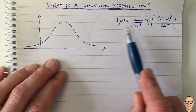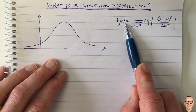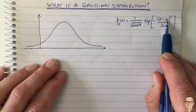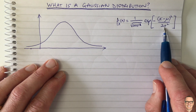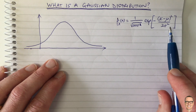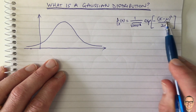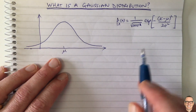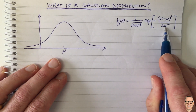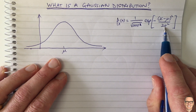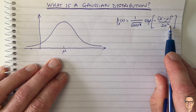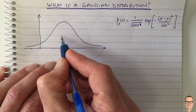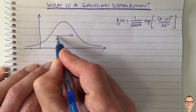Here's the equation for the probability density function. Mu is a variable and sigma is a variable. It turns out that mu is the mean of this probability density, and sigma is the standard deviation. So sigma squared is the variance, and that indicates the width of the bell.